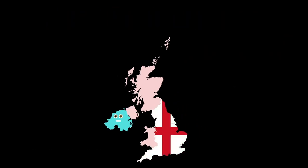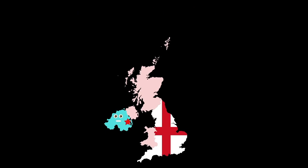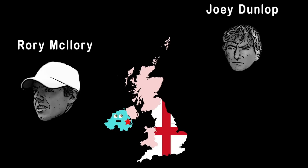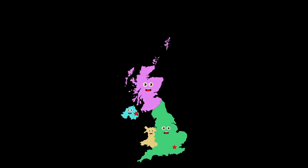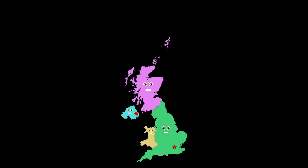I'm Northern Ireland, a province of the UK. My capital's Belfast, touching the Belfast Bay. I was created on May 3, 1921 when Ireland was partitioned by the British Parliament. Rory McIlroy, Joey Dunlop, and Van Morrison are just a few of the talents from Northern Ireland.